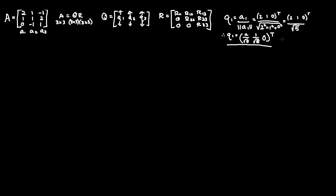Fortunately, we already know what R11 is — the top left index of R. It's simply the magnitude of A1, which we already found was root 5. Furthermore, we know R21 equals R31 equals R32 equals 0, such that it is an upper triangular matrix, as previously mentioned.